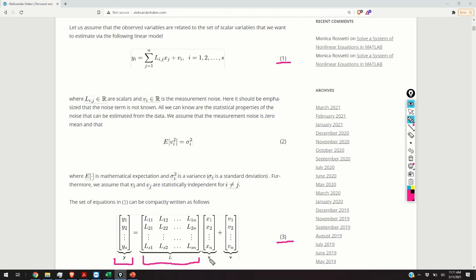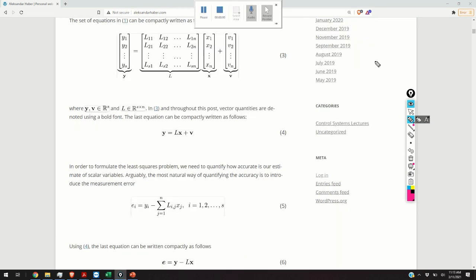In this equation the vector y collects all the observed variables. The matrix L collects the terms Lij from this equation and the vector x collects the variables that we want to estimate. And finally the vector v is the measurement noise vector. The equation 3 can be compactly written as the equation 4.